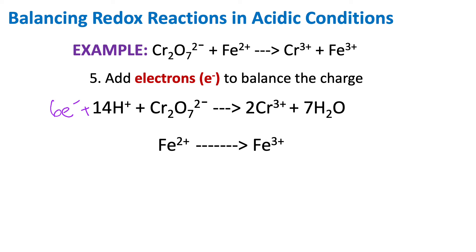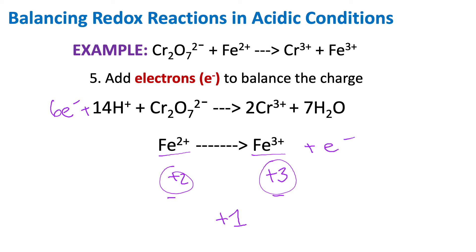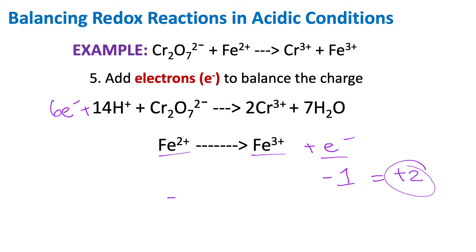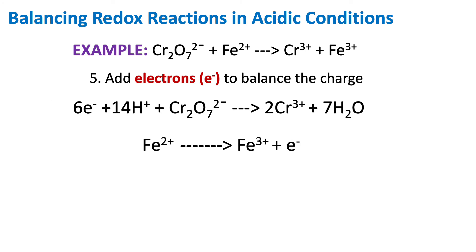Now let's take a look at our second half reaction with the iron. Here we have a positive 2 charge on the left and a positive 3 charge on the right. We're going to add electrons to the more positive side. These two sides only differ by 1, so I only need to add 1 electron to the right side. Adding 1 electron is the equivalent of adding negative 1, so positive 3 minus 1 gives positive 2. Now I have positive 2 on both sides — we have balanced our electrons.